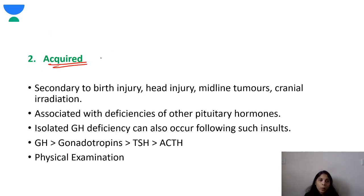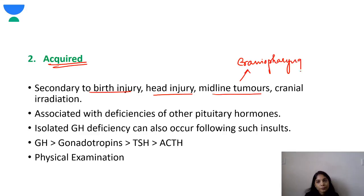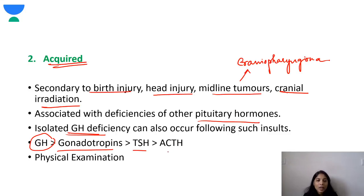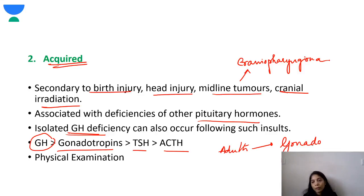The acquired cause of growth hormone deficiency can be secondary to birth injury, head injury, midline tumors, or cranial irradiation — these are also often associated with other pituitary hormone deficiencies. Following such insults, in children the order of hormone loss is: growth hormone first, then gonadotropins, then TSH, then ACTH. In adults, the first to be affected is gonadotropin. Physical examination may show optic atrophy, dermatitis, or hepatomegaly as in Langerhans cell histiocytosis.